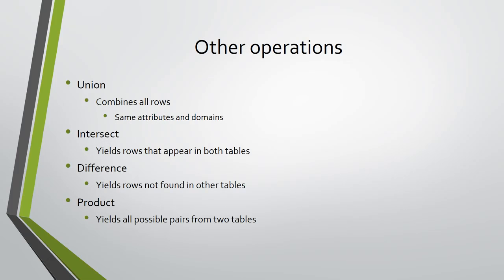Among the less frequently used operations, the union operation combines all tuples from two or more relations. That means that a tuple appearing in either relation also appears in the result. The relations have to be compatible — they must have the same number of attributes, with the same domains for corresponding attributes. In most cases the relations have exactly the same attributes for the union to make sense.